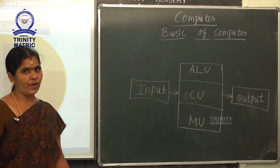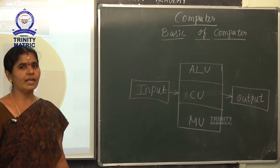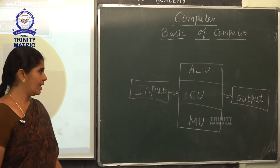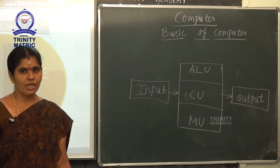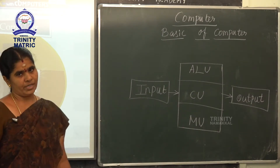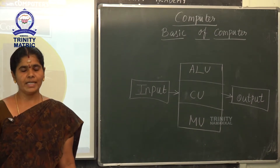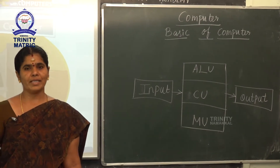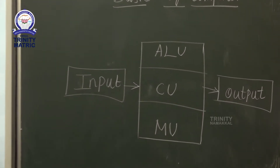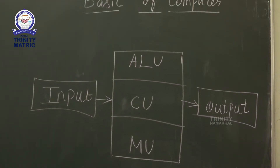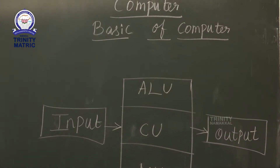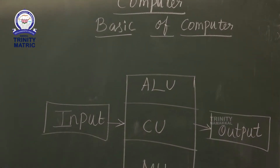What is the full form of ALU? Arithmetic and Logic Unit. The second one is Control Unit. The third one is Memory Unit. Arithmetic means addition, subtraction, multiplication and division. All these processes are done by the CPU.